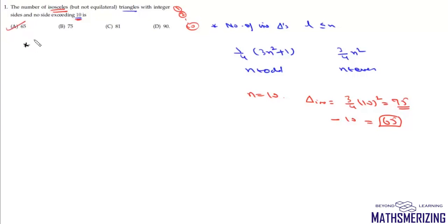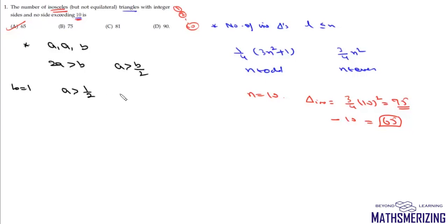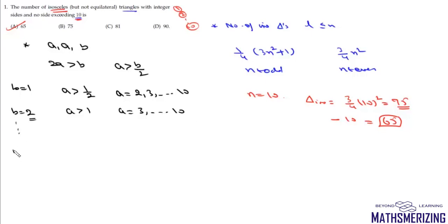Another method: suppose sides are A, A, and B. Triangle inequality requires 2A > B. If B = 1, A ≥ 1, so A goes from 2 to 10 (excluding equilateral). If B = 2, A goes from 3 to 10 (excluding A = 2). Continuing up to B = 10 where A can be 6–9, counting all valid cases again gives 65. That's option A.